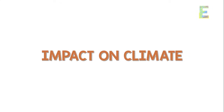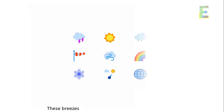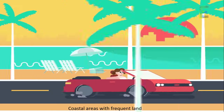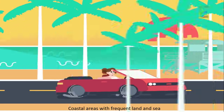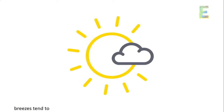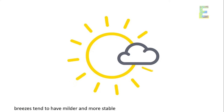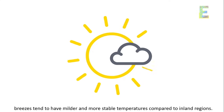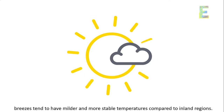Impact on climate. These breezes have a significant impact on local climates. Coastal areas with frequent land and sea breezes tend to have milder and more stable temperatures compared to inland regions.